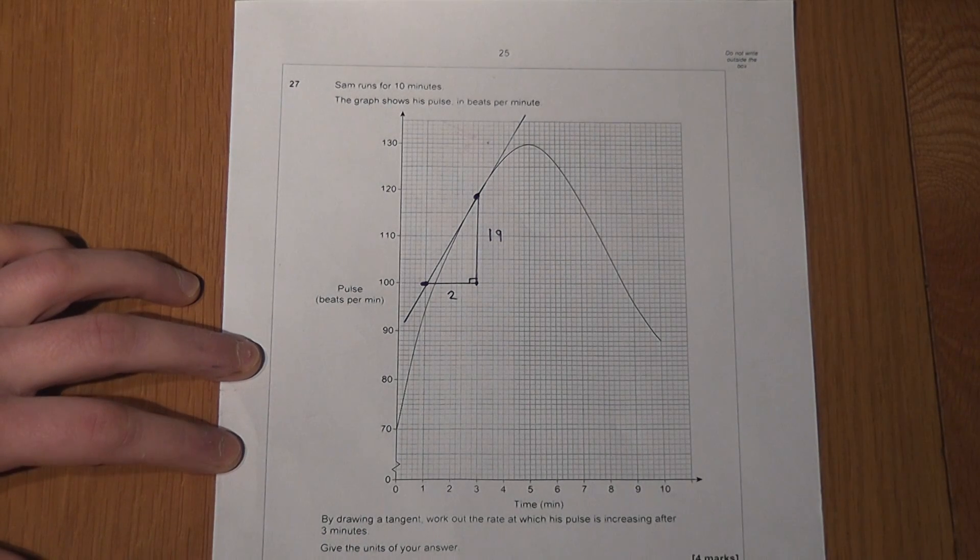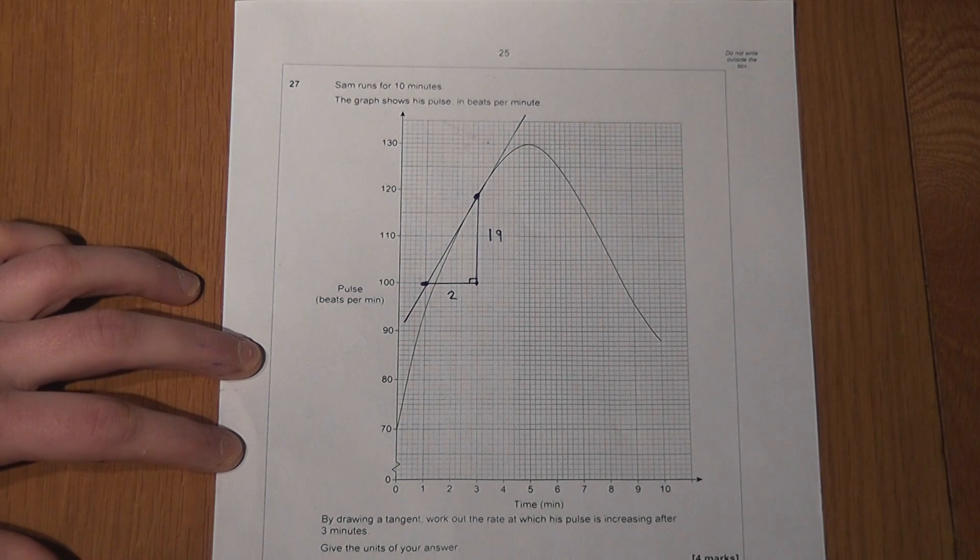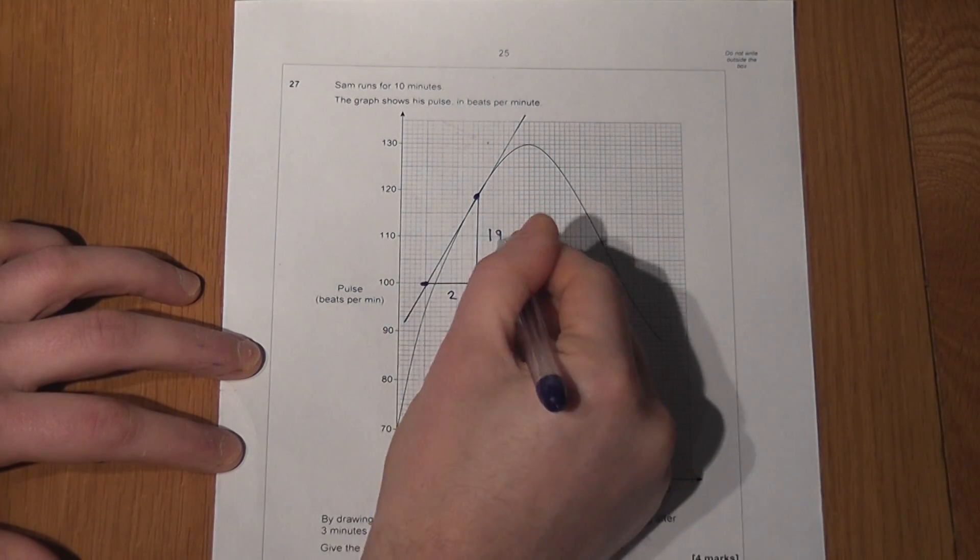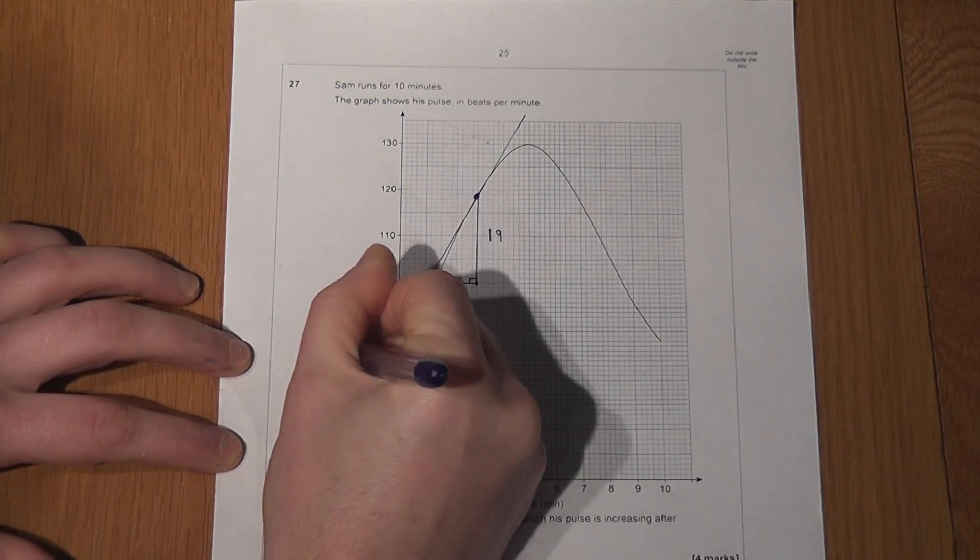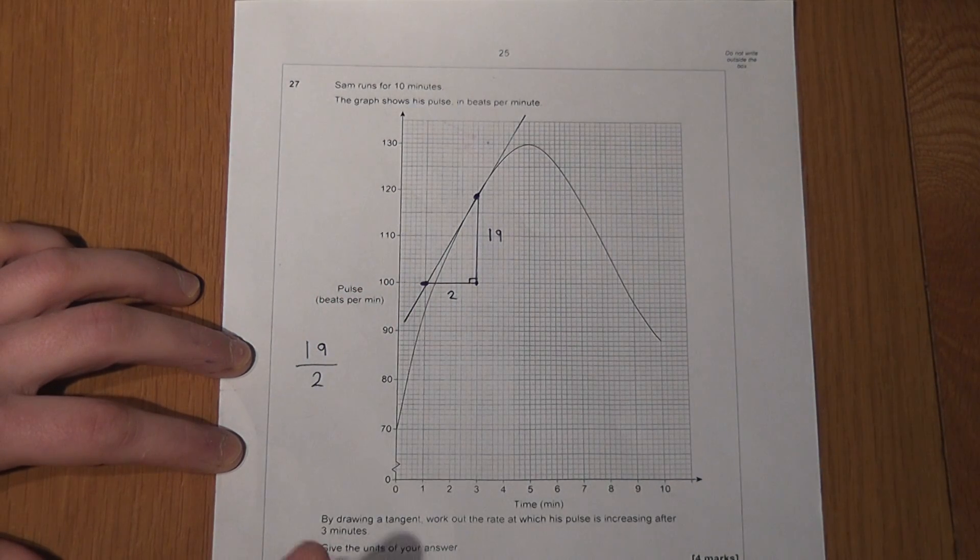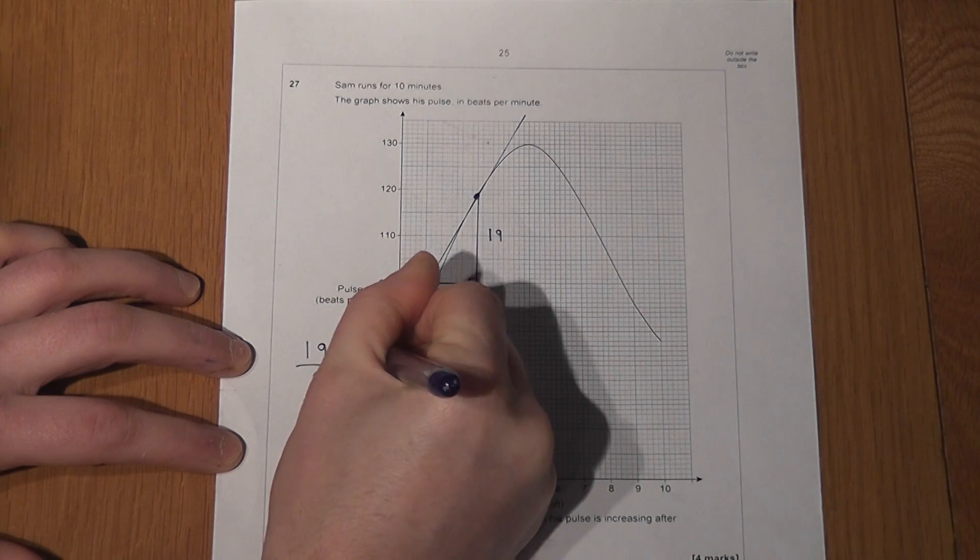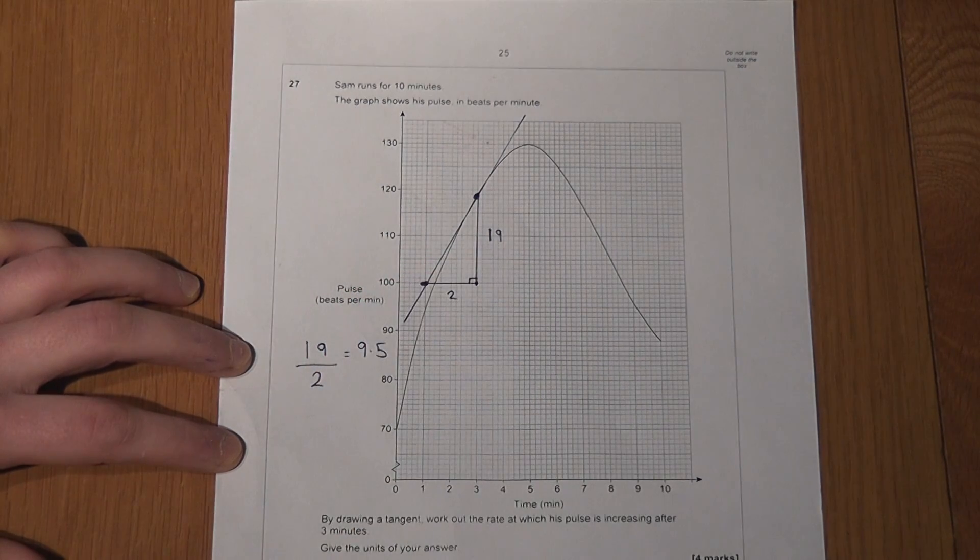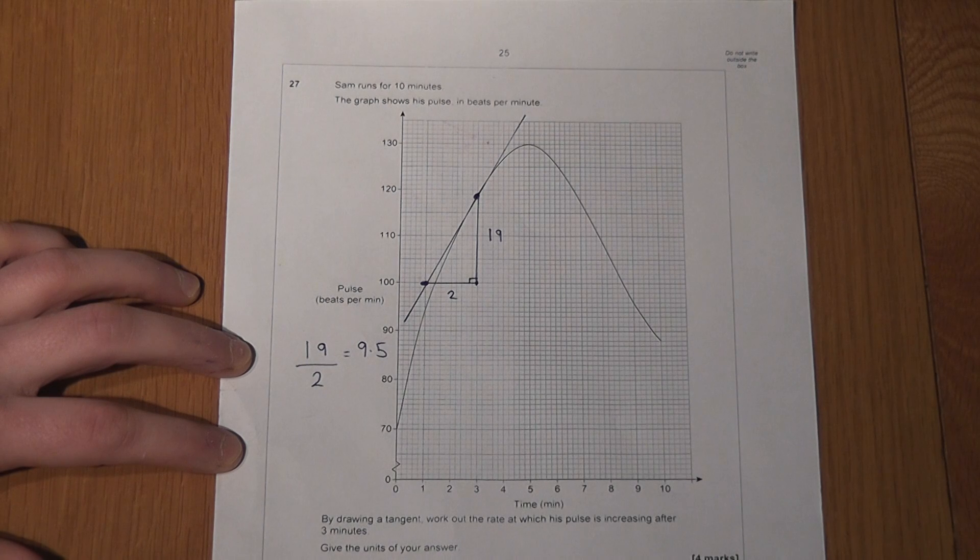So, I can now find the gradient. The gradient is given by the rise over the run, which is 19 over 2, which is 9.5. This is the gradient, and this is the rate at which his pulse is increasing.